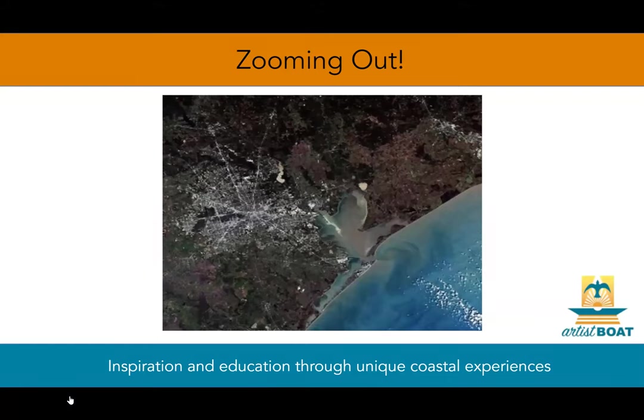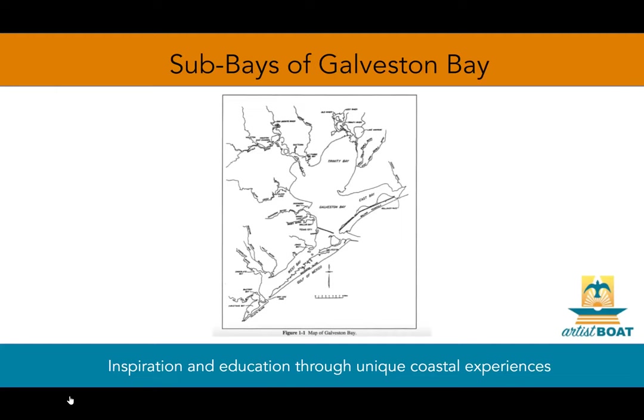Let's pause for a vocab moment. What's brackish water? It's a mixture that's part salt and part fresh water. As figure 1-1 above shows you, the body of water that we call Galveston Bay is actually a large bay system.